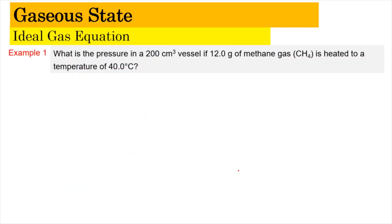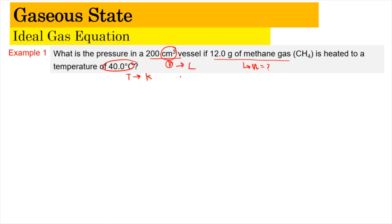I suggest you use the value 0.08206 L·atm per K per mol because it is much more consistent with the units we are using. We are not dealing much with joules, so we use this value of R so that we can cancel out atm, litre, mole, and Kelvin in our calculations. Now we're going to look at an example of how to use the ideal gas equation to solve a problem. Example number one: what is the pressure in a 200 cm³ vessel if 12 grams of methane gas is heated to a temperature of 40 degrees Celsius?